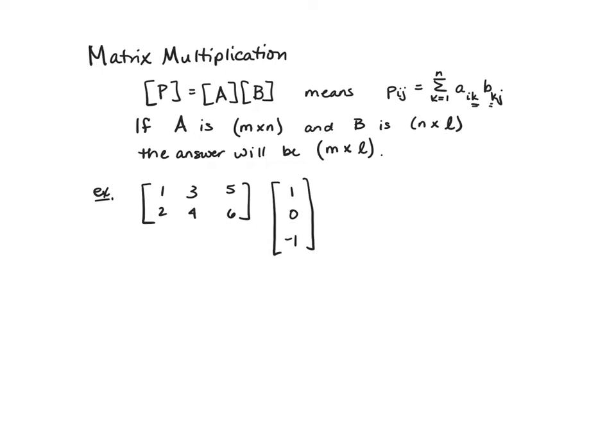So the key thing is the shape really matters. If matrix A was an m by n matrix and matrix B was an n by l matrix. If these here are the same, the multiplication is possible. And the answer will be m by l.